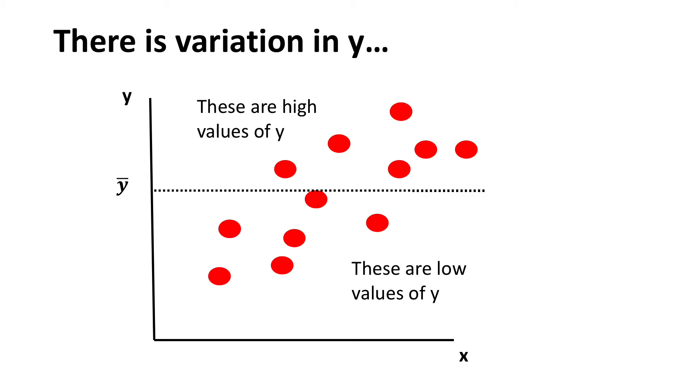The coefficient of determination, also known as r squared, is based on the premise that there's variation in y, or the dependent variable. So let's say in this figure y represents income. I put in a label of y bar, which is the average income in this sample, just to give you an idea that there are some people that earn more than average, and there are some people that have incomes that are less than average. Some make a little and some make a lot. So says J-Lo, Jenny from the block.